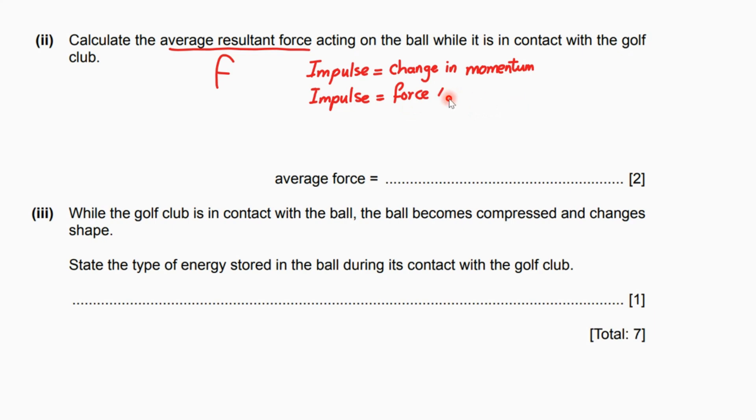Why did we mention that impulse equals the change in momentum? Because I'm trying to link part ii to part i. The change in momentum in the previous step was 3.0, which is the value of the impulse, and equals the force, which is unknown, times the time taken, which is 5 times 10 to the negative 4. You can divide both sides by 5 times 10 to the negative 4. It gives us finally 6000 Newtons. So you get two marks here, one mark for showing the calculation and one mark for the correct answer with the unit.